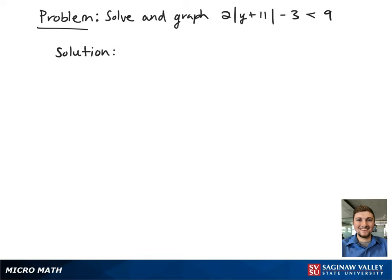Here we have the absolute value inequality: 2 times the absolute value of y plus 11 minus 3 is less than 9.